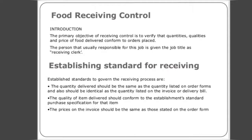Here is the introduction of Food Receiving Control. The primary objective of Receiving Control is to verify that quantities, qualities, and price of food delivered conform to orders placed. The person usually responsible for this job is given the job title of Receiving Clerk.